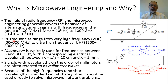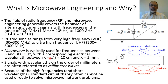Our frequency range varies from VHF, which is from 30 to 300 MHz, to Ultra High Frequency UHF, which is from 300 to 3000 MHz or 3 GHz. Microwave is typically used for frequencies between 3 GHz and 300 GHz. These frequencies correspond to wavelengths from around 10 cm to 1 mm. The wavelength is determined as the speed of light divided by the frequency.